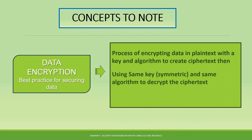Data encryption is the process of converting plaintext with a key and an algorithm to create ciphertext. For the data to be understood, it has to be decrypted — that is the process of removing the encryption. Both encrypting and decrypting involve a key and an algorithm.